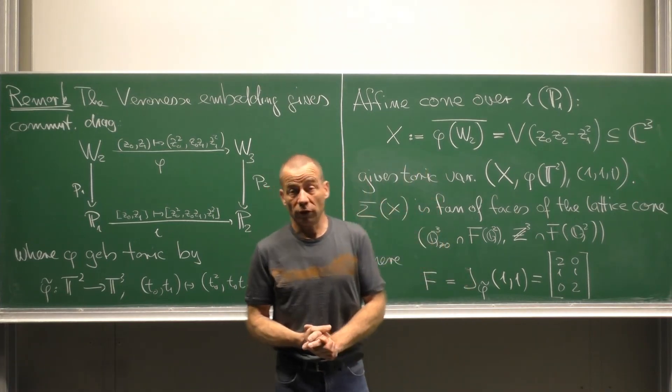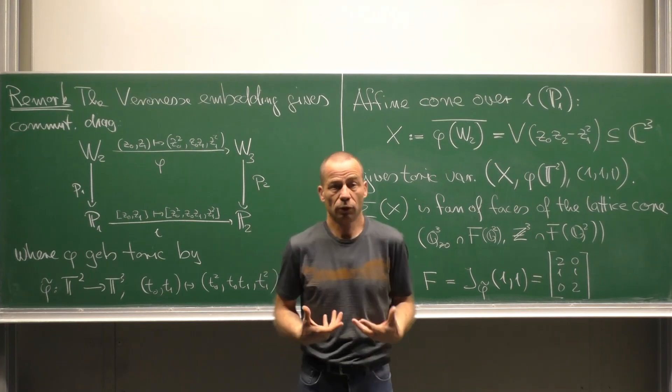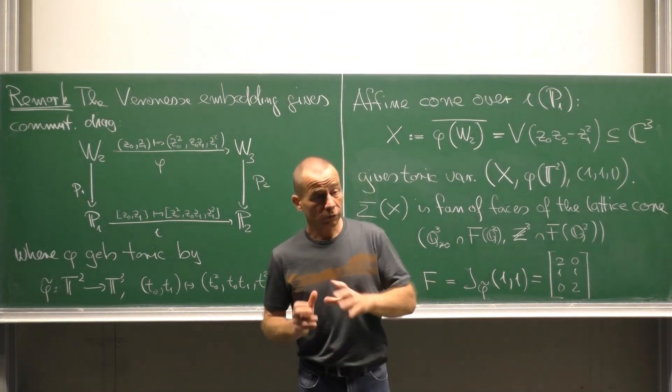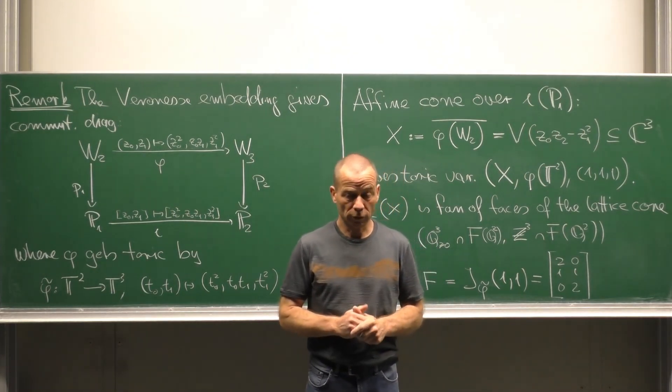In fact this recipe works more generally. It can be used to determine the fans of convergence cones under images of toric morphisms. See you in the next clip.